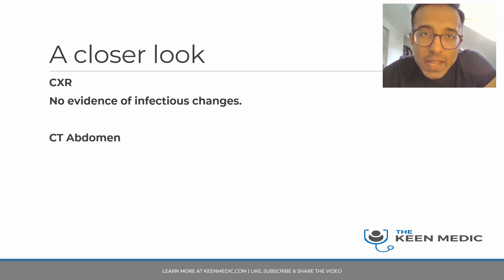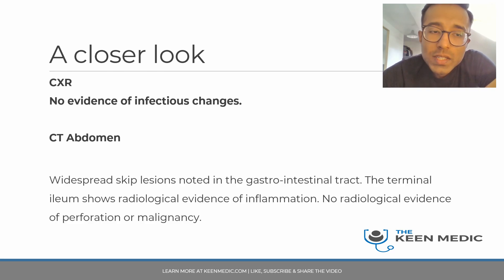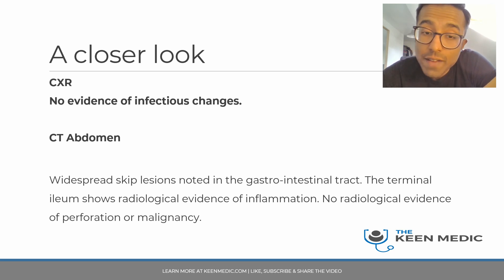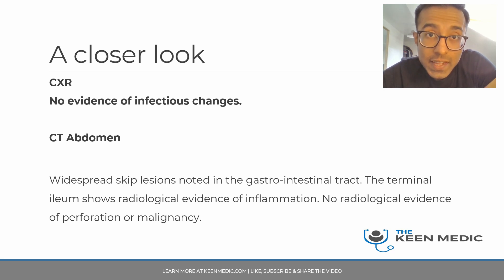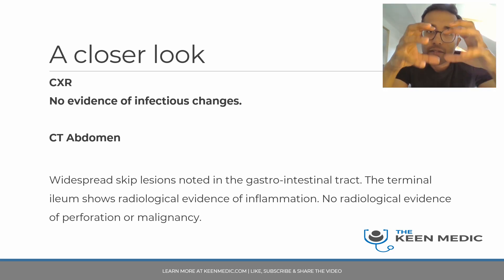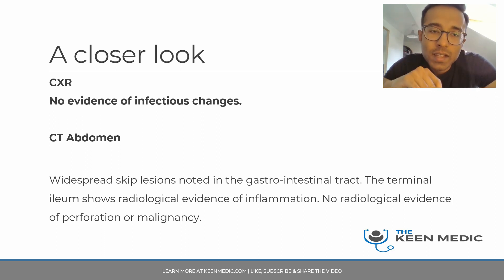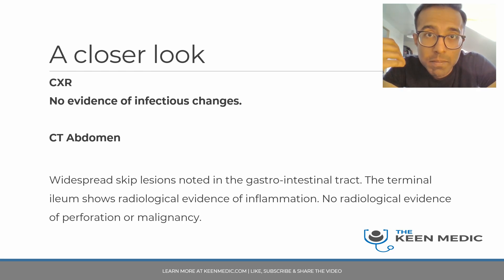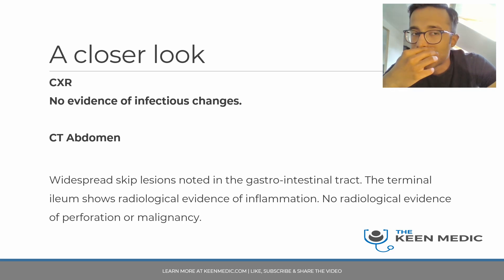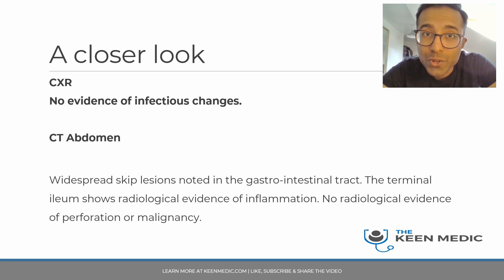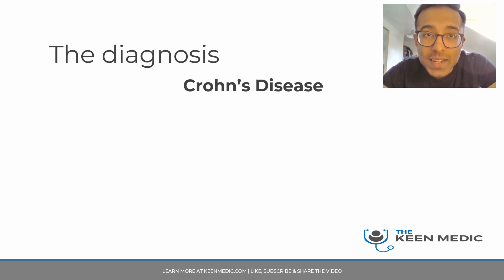A CT abdomen is performed and shows widespread skip lesions noted in the gastrointestinal tract. The terminal ileum shows radiological evidence of inflammation. There is no radiological evidence of perforation or malignancy. So his entire GI tract is inflamed with skip lesions — areas of bowel which are inflamed interspersed with areas that are not. This is classical of Crohn's disease, which is the diagnosis.